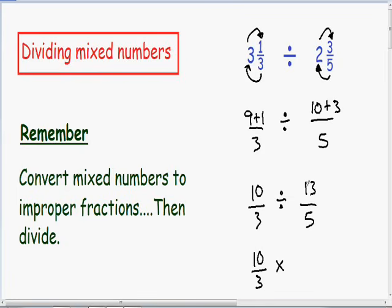So instead of dividing by 13 over 5, I'm going to multiply by 5 over 13. 5 over 13 is the reciprocal of 13 over 5. So now I'm going to multiply these two fractions.